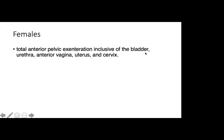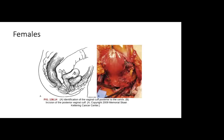For the female, exenteration inclusive of the bladder, urethra, anterior vagina, and the uterus and cervix is done. Usually for more advanced disease, exenteration is still the gold standard for therapy. An anterior pelvic exenteration begins with the identification of the posterior fornix, and the vaginal cuff is incised. After gaining access into the vaginal canal, the surgeon can control the lateral posterior vascular pedicles to the bladder. The urethral meatus is then incised — either antegrade from the pelvis or externally from the vagina — and the specimen is removed. Care should be taken to ensure sufficient vaginal mucosa is maintained above the urethral meatus to allow closure of the vaginal defect.